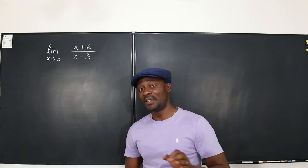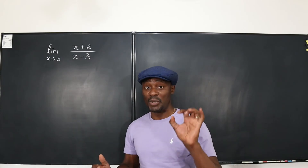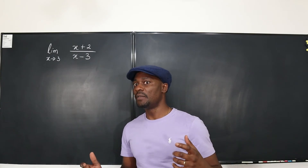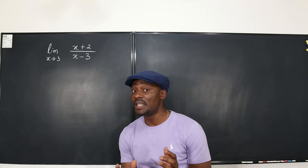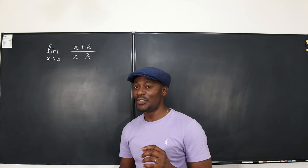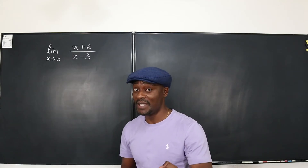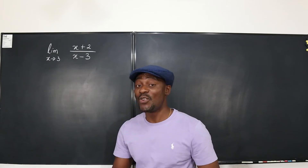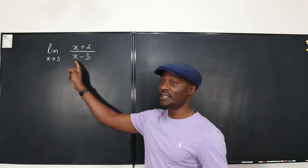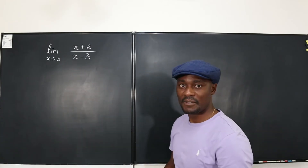A quick sign to tell you that the limit of a function does not exist at a particular point is when you start seeing answers like infinity. When you see infinity in a problem, especially if it's a rational function, the answer is either actually infinity, negative infinity, or it does not exist. And you have to investigate every time you get a denominator that's zero.